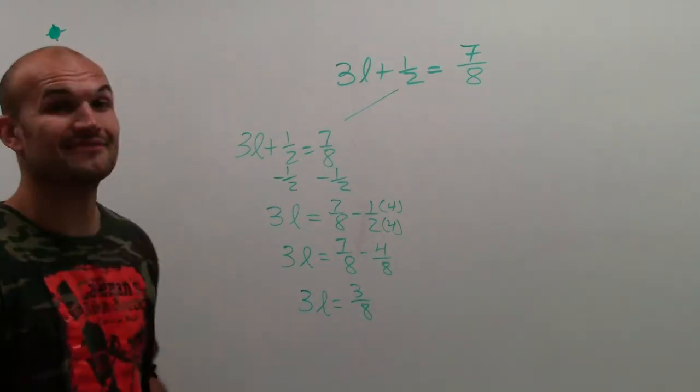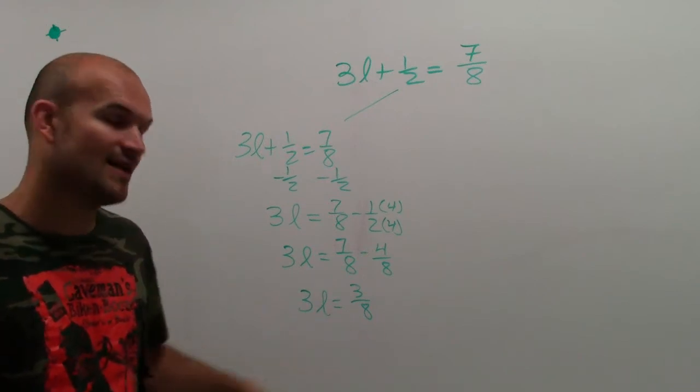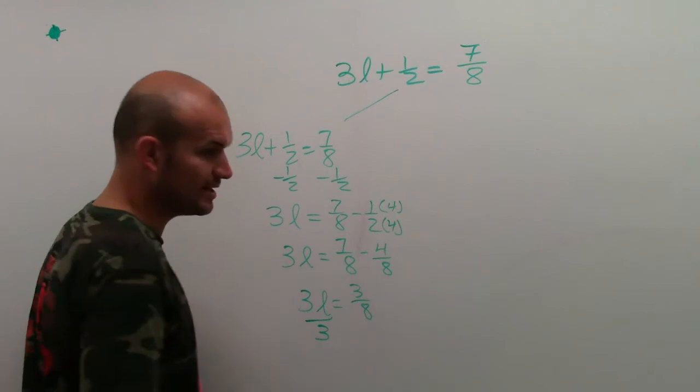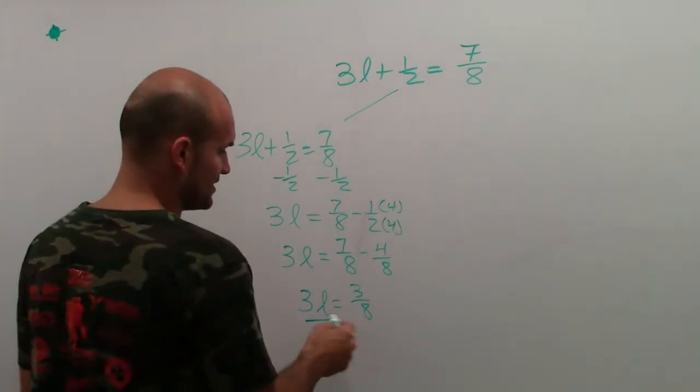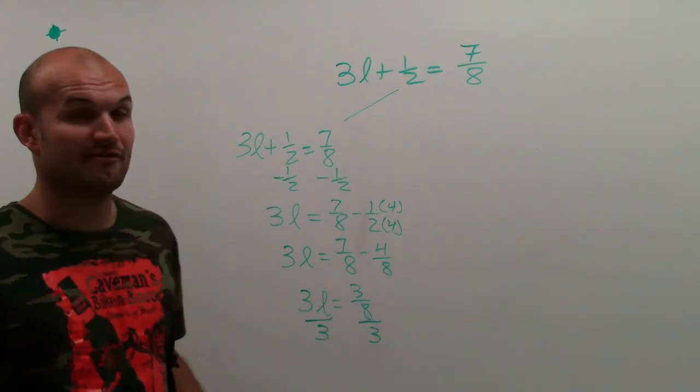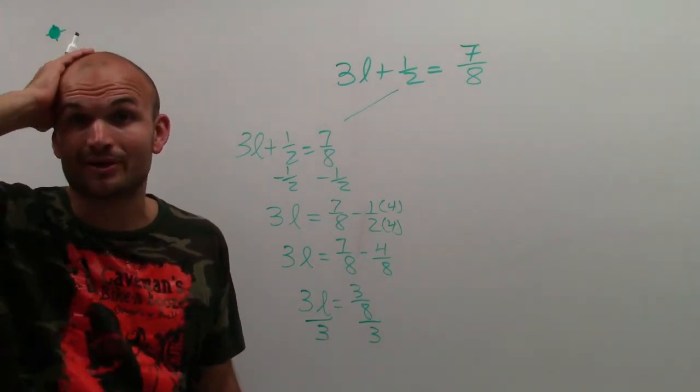Now, what I need to do is divide by, now I need to undo multiplication of 3 by dividing by 3. So I'm going to divide by 3 on both sides. So I divide by 3 and divide by 3. So now I have a fraction being divided by 3, which is like, whoa, this is starting to get pretty crazy, right?